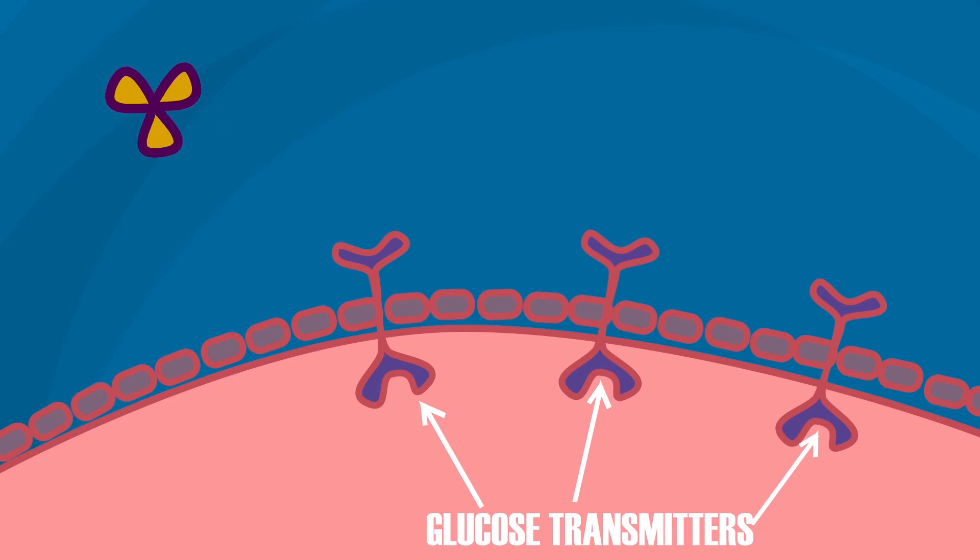When your body doesn't produce enough insulin, or it doesn't efficiently use the insulin it makes, your blood sugar may become too high. When this happens, your body's cells cannot use the sugar in your blood.